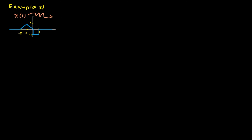x(t) is given and the question is what is −x(t/3−1). Step number one: time shifting. The shift value here is negative, so we need to shift the signal to the right by one unit. Minus two on the time axis goes to minus one, minus one goes to zero, zero goes to one, and one goes to two. Here is the shifted signal. The amplitude stays the same.